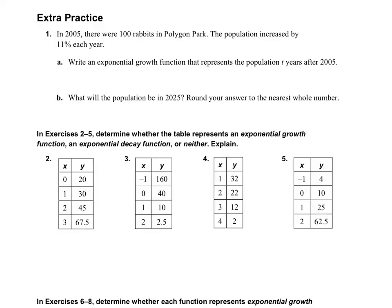Okay, we're going to skip to page 187. So let's take a look at this first problem here. In 2005, there were 100 rabbits in Polygon Park. The population increased by 11% each year. First, we want to write an exponential growth function that represents the population T years after 2005. And then we want to use our calculators to find out what the population would be in 2025, rounding to the nearest whole number since it's rabbits. It doesn't make sense to have a partial number there.